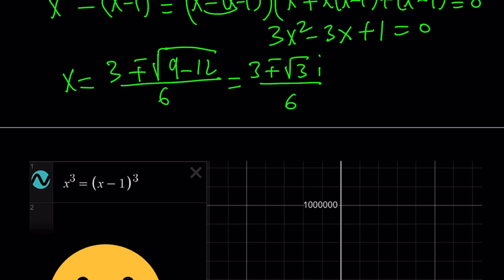We can write it as (3 ± √3i) / 6. And obviously, this can be simplified. You can divide everything by 3. Well, actually, you can't do that because we have the square root of 3. So that's basically going to be the answer. Okay, so we don't have any real solutions.